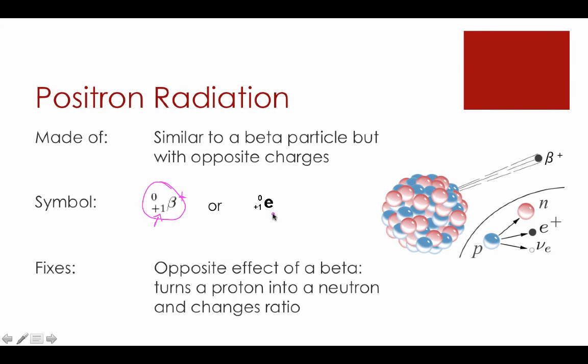And just like we can use the E for beta, we can use the E for positron as well. Notice the mechanism over here is pretty much the same, but in this case, the opposite is happening. A proton is now turning into a neutron and giving off a positron in the process.